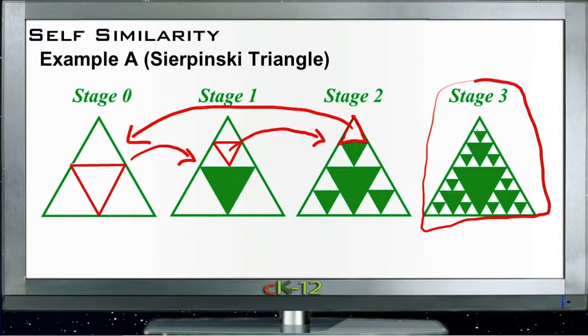So this triangle is self-similar because any one of these sections here can be made to resemble the entire triangle itself or the entire figure itself after going through all the iterations.